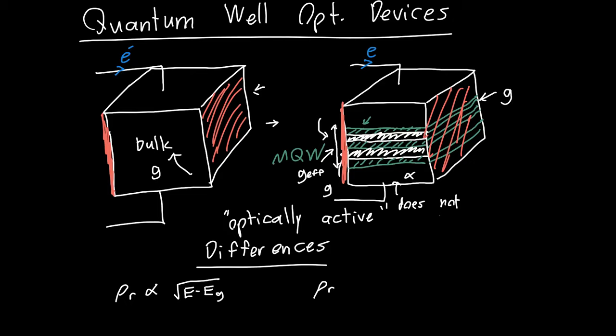So it's no longer a function of energy. It'll also turn out that bulk devices also have a higher threshold current. Quantum well devices have a lower threshold current, which is one of the reasons we love them so much.